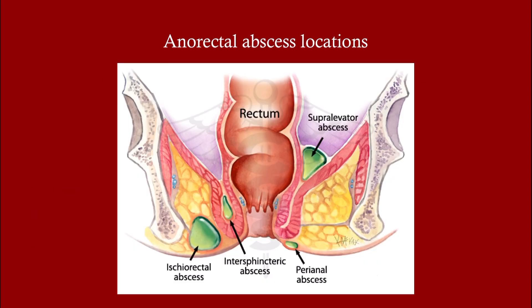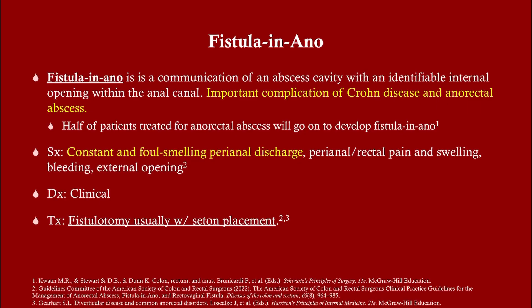Looking at the different locations: the perianal abscess is typically very close to the anal orifice. The ischiorectal abscess is usually further out on the buttocks. The others are more internal and require more delicate surgical management.